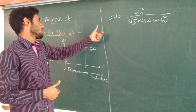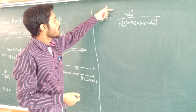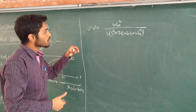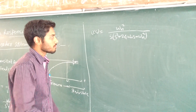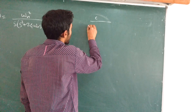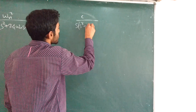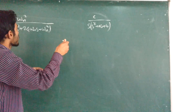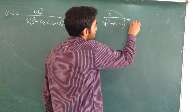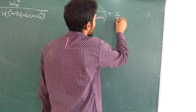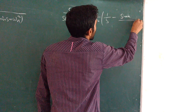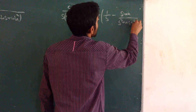Now if we want to see the response of the output in the time domain, we first find out the inverse Laplace transform of this response using partial fractions. If we have a transfer function of the form c / [s · (s² + as + b)], then we write it in partial fraction as c/b · [1/s − (s + a) / (s² + as + b)].